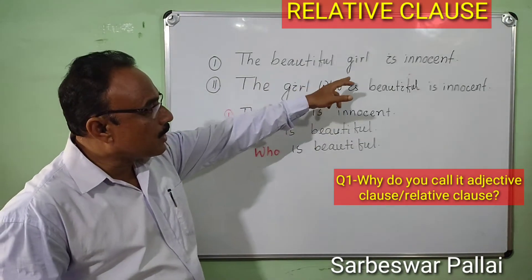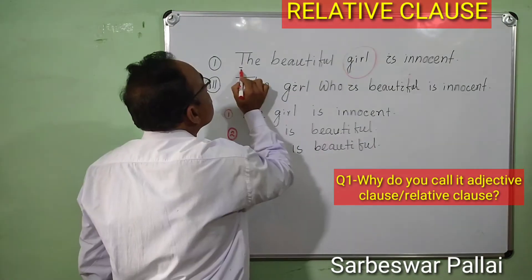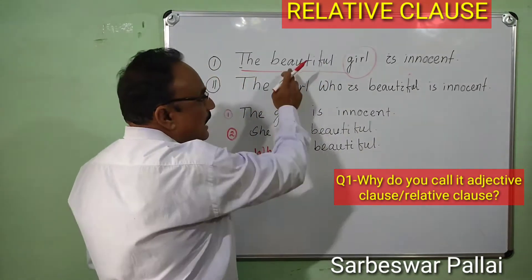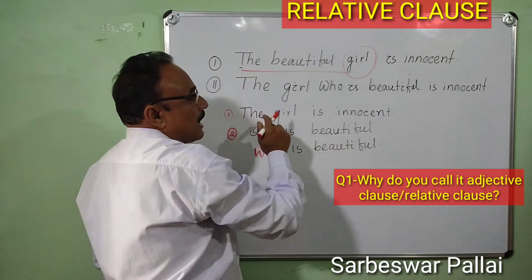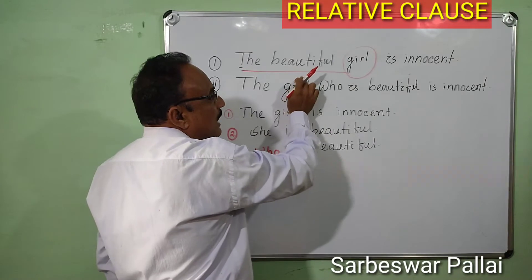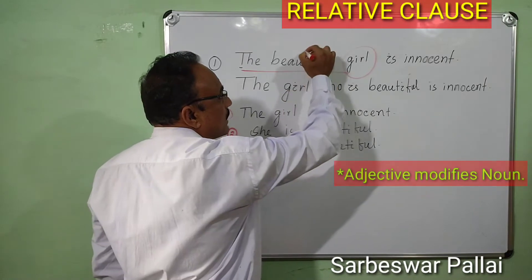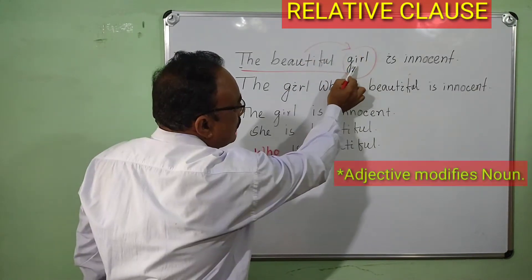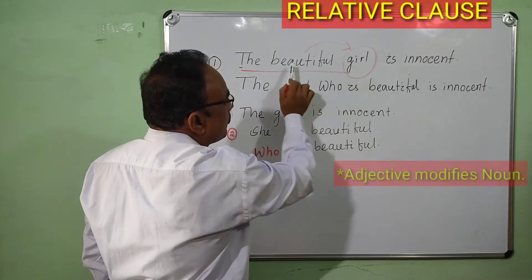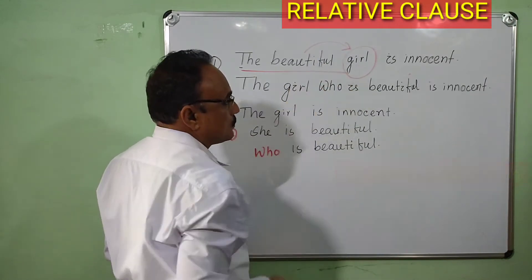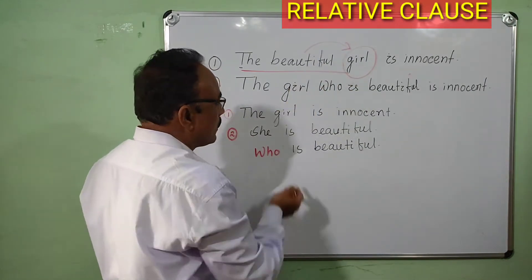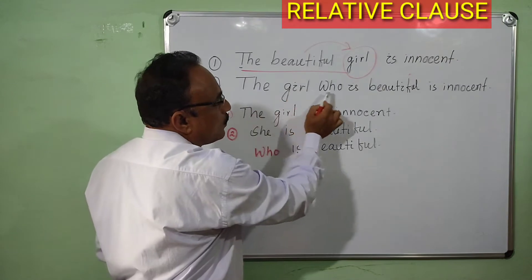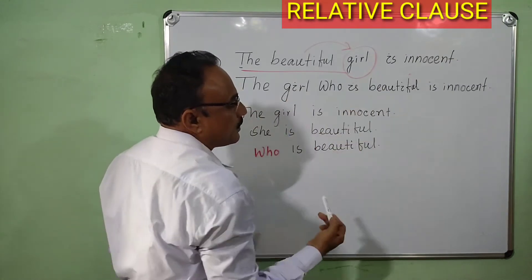Look at the sentence: 'The beautiful girl is innocent.' This is a noun phrase. What is the adjective? The adjective modifies the noun. Now look at another sentence: 'The girl who is beautiful is innocent.' Here the adjective clause 'who is beautiful' replaces the simple adjective.